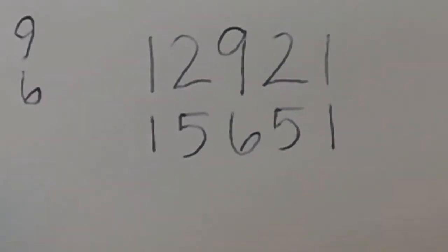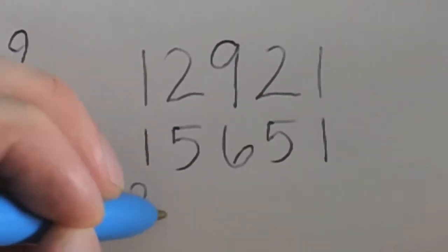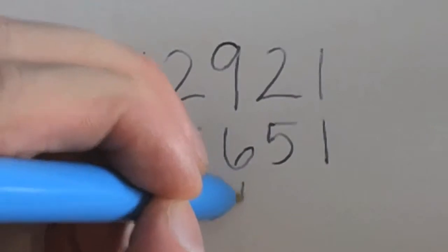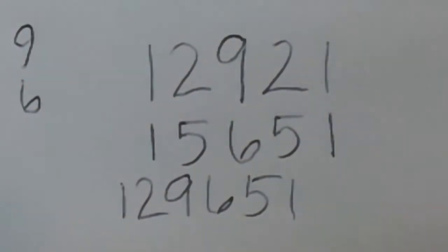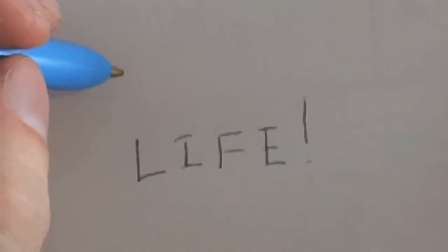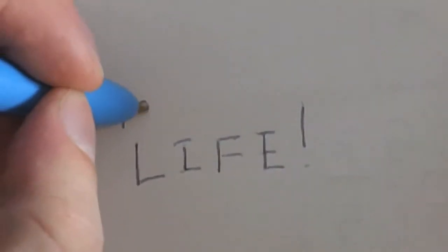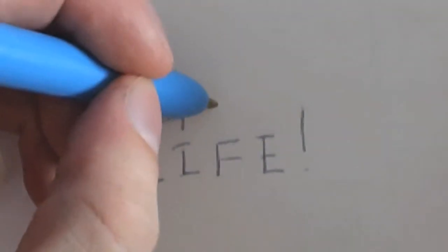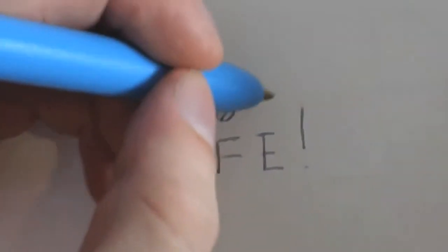I'm going to take the 129 and then add the 651 behind it, and I was utterly shocked when I found this. Life — it's what we're all living. L is the 12th letter of the alphabet. I is the 9th. F is the 6th. And E is the 5th. Wow, how about that?